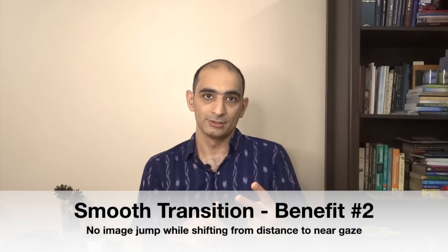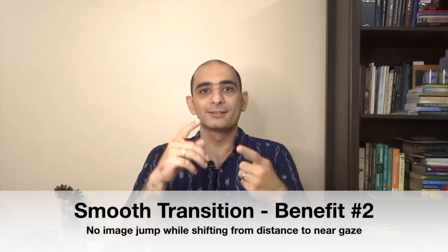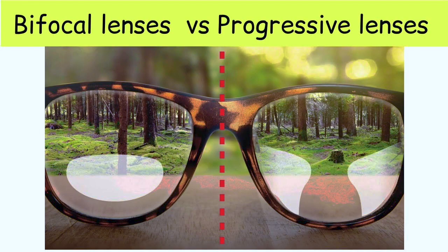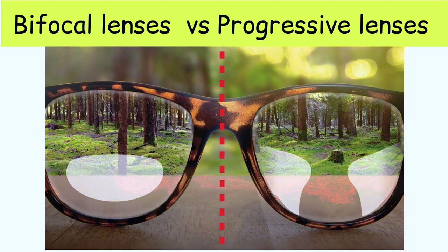Smooth transition. Unlike traditional bifocal or trifocal lenses that have visible lines separating different lens powers, digital progressive lenses provide a smooth and seamless transition between distance, intermediate, and near-vision. There is no abrupt change in power, offering a more natural visual experience.